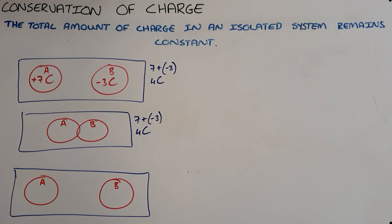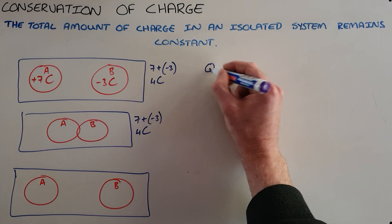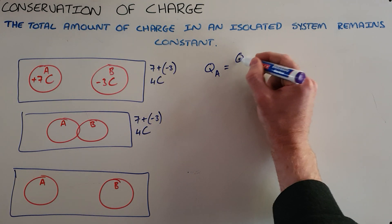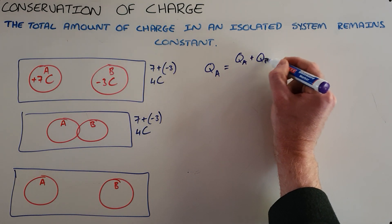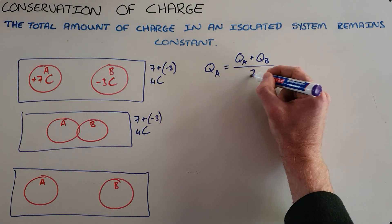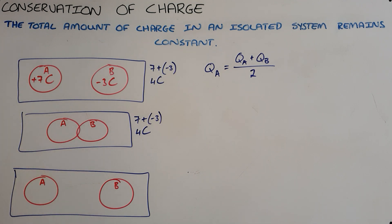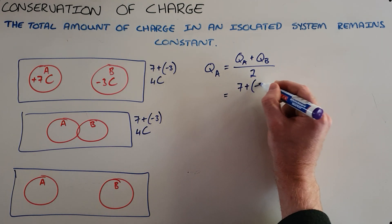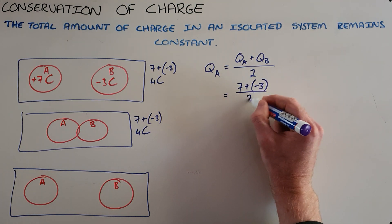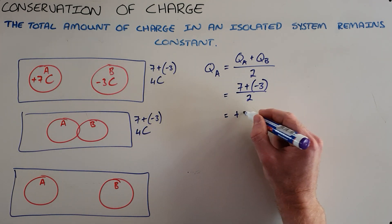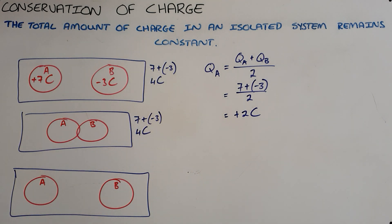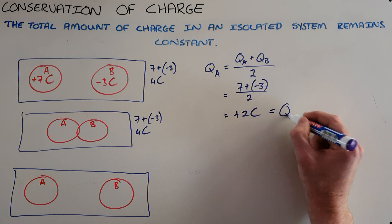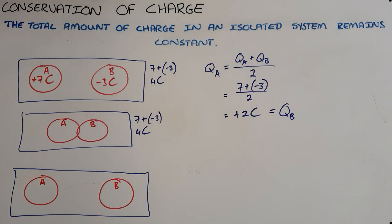The question here asks what the charge is on each of these objects. This is called charge sharing, and we can calculate the new charge on object A by realizing it is equal to the initial charge of A plus the initial charge of B — the total charge in the system — divided equally amongst the two objects. Obviously it's possible for there to be three objects, and then you would divide by three. So in this case it's going to be 7 coulombs plus negative 3 coulombs divided by 2, which gives us 4 divided by 2. The new charge on object A is positive 2 coulombs, and it is also the new charge on object B because the charge is shared equally.